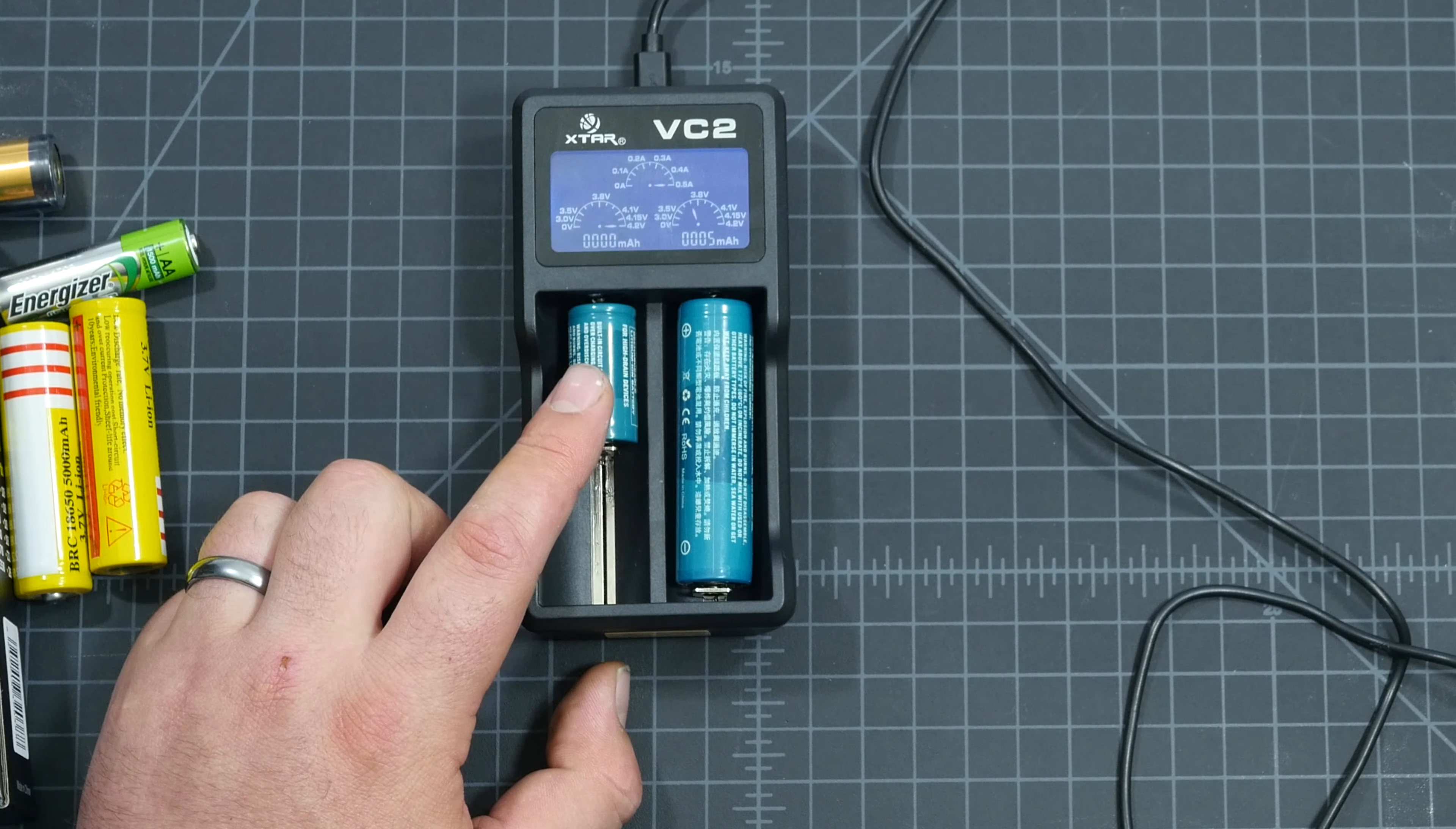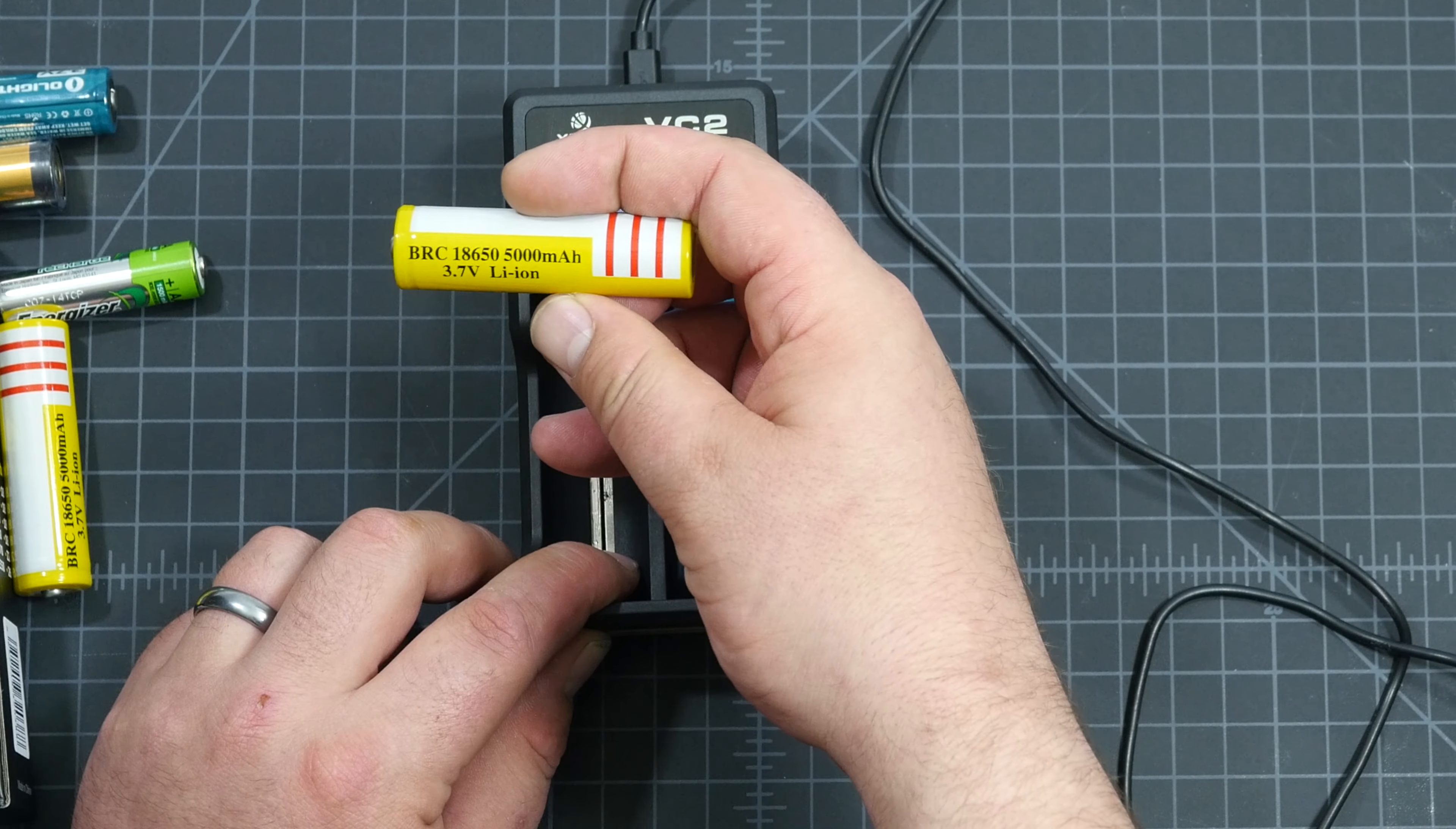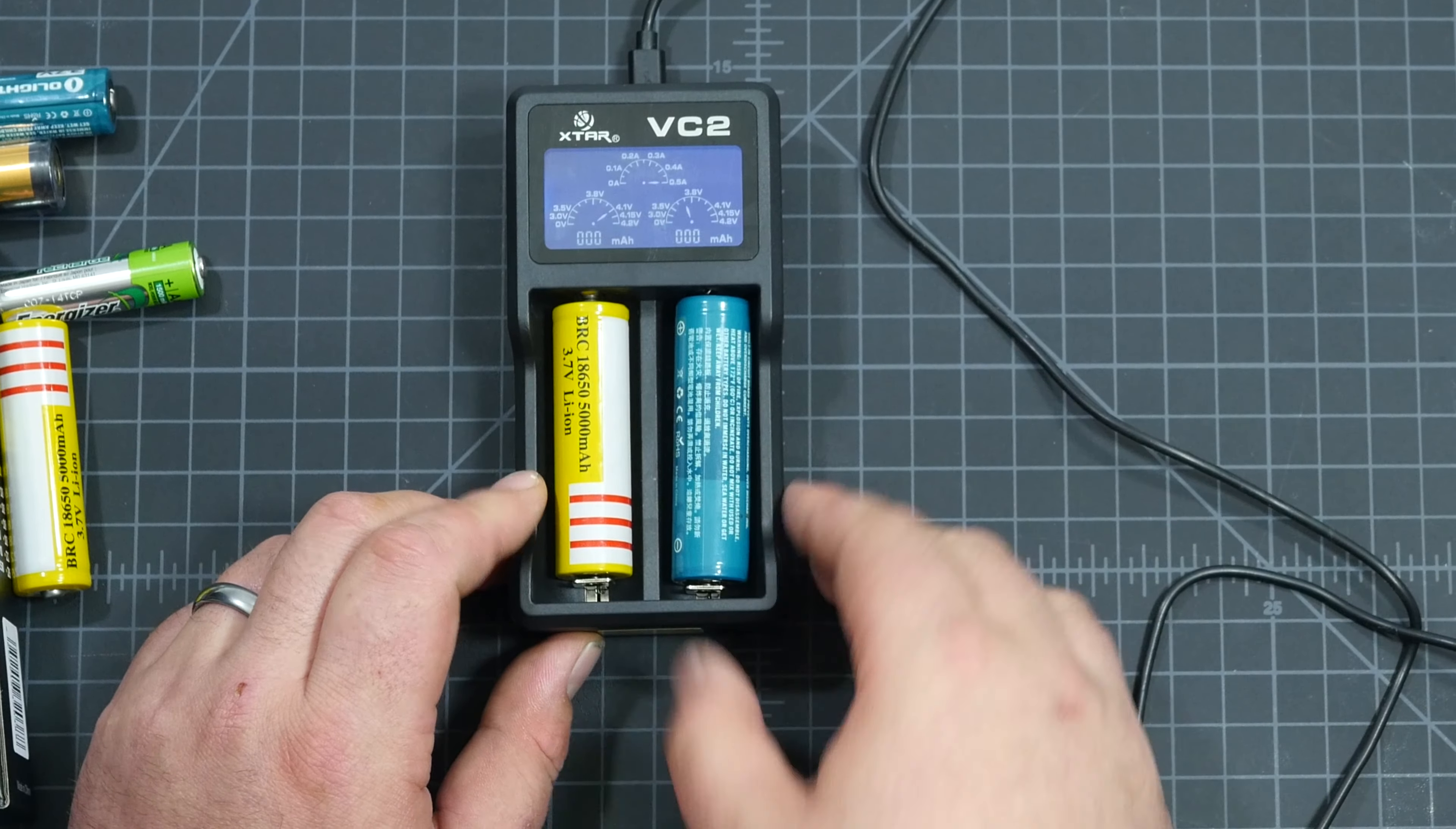So I charged this one up just the other day. So that one should be pretty good to go, but I have some other off-brand. There's some BRC 18650s, 5,000 milliamps. I can go ahead and put these in there. I can see the voltage and that's that.